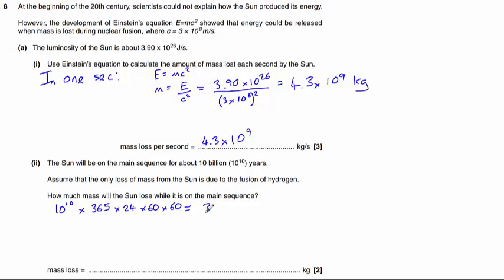It gives us 3.15 times 10 to the power of 17 seconds. And we know that each second, 4.3 times 10 to the power of 9 kilograms is being lost, so we need to multiply these two numbers together, so 4.3 times 10 to the power of 9 kilograms per second, multiplied by 3.15 times 10 to the power of 17 seconds. Gives us 1.4 times 10 to the power of 17 kilograms.